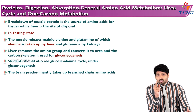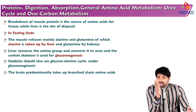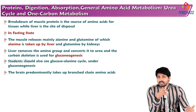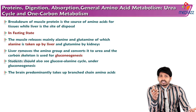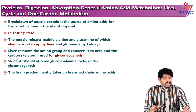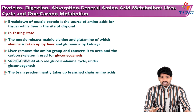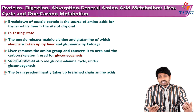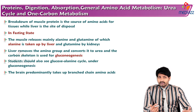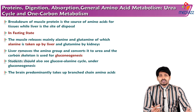Muscle protein is a key source of amino acids when the body requires them. In the fasting state, the body is lacking energy, so gluconeogenesis — the synthesis of glucose from non-carbohydrate sources — must take place. Protein is a non-carbohydrate source; when broken down it forms amino acids. Based on metabolic fate, amino acids are classified as glucogenic, ketogenic, or both glucogenic and ketogenic.